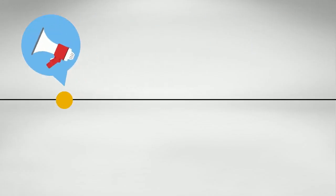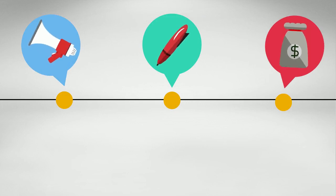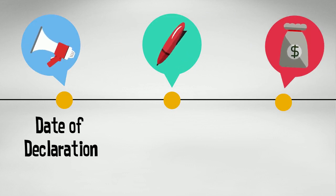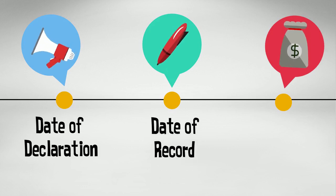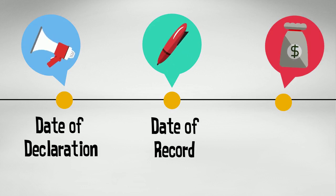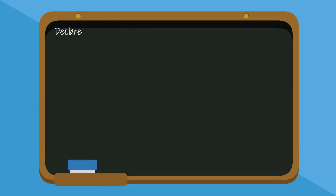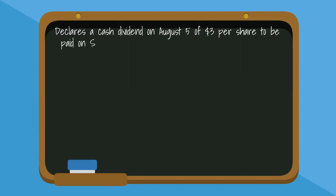There are three important dates related to dividends. The first date is the date of declaration — this is the day that the board of directors declares their intention to pay a dividend and how much it will be. The second date is the date of record — the company needs to know which stockholders own stock and how much on this date, and these stockholders will get the dividend when it's paid. The third date is the date of payment — this is when the company actually pays the dividend. For example, assume a company declares a cash dividend on August 5th of $3 per share, to be paid on September 5th for all shareholders on record as of August 31st.